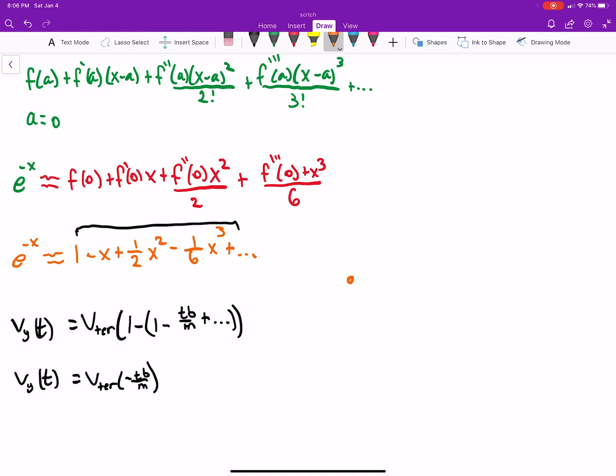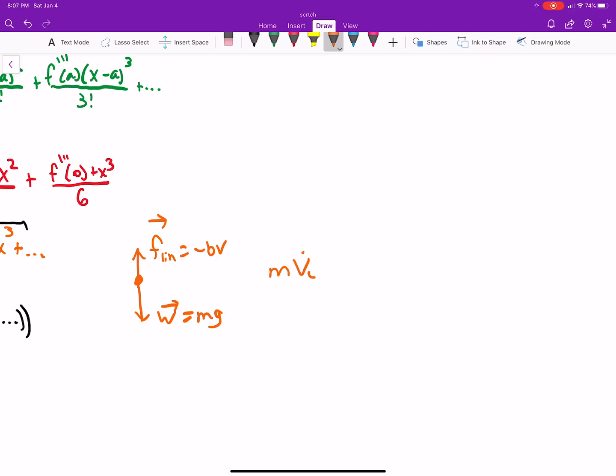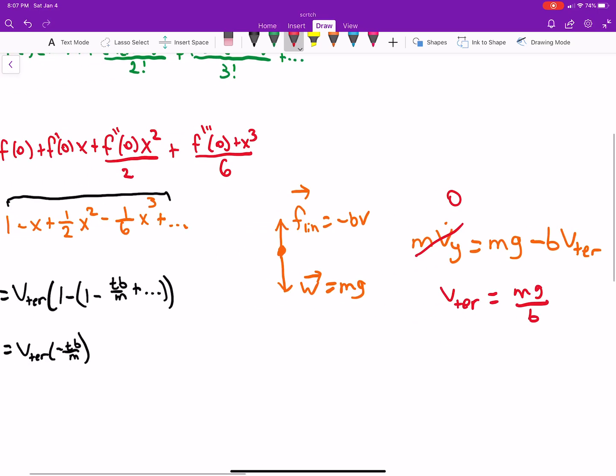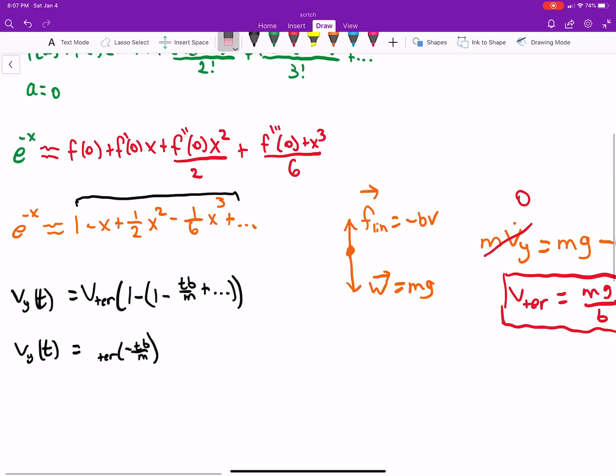But if we think about our object in free fall, if we think of a free body diagram, what do we have? We have the weight force, we have our air resistance. And if we worked out the dynamics here, mass times acceleration is equal to, we'll let down be positive. And if we take our terminal velocity, that's when this is zero. So we find v terminal is equal to mg over b. We worked that out in the lecture, but I can also substitute that in.